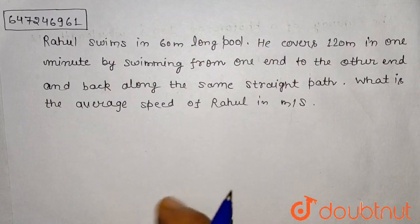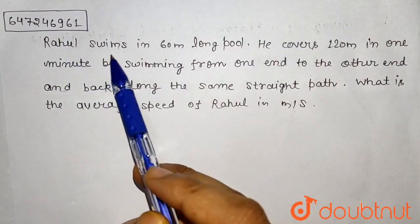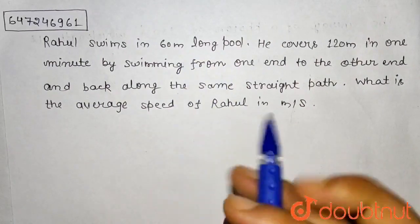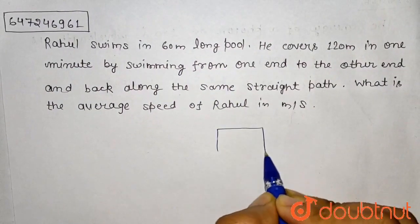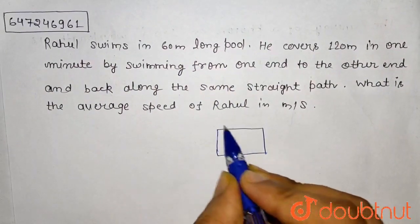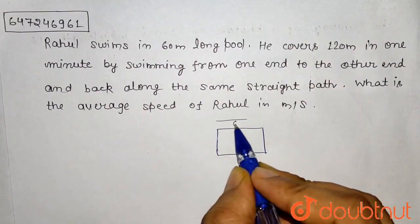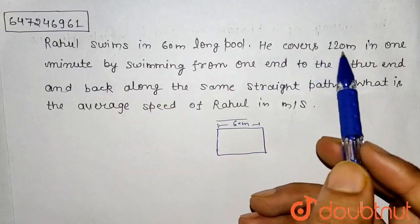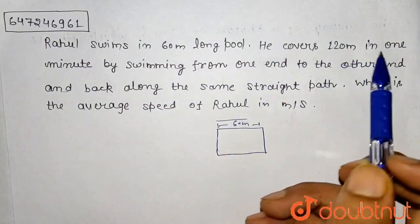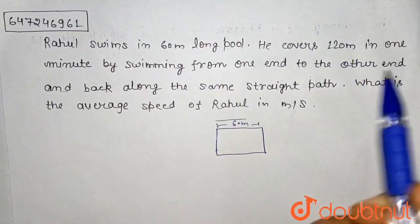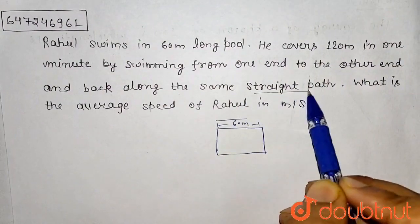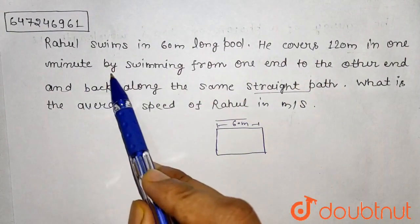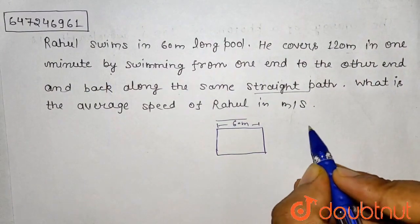So this question tells us that Rahul is a person who is swimming in a swimming pool which is 60 meters long. We are told that our swimming pool is 60 meters long. Now, he covers 120 meters distance.